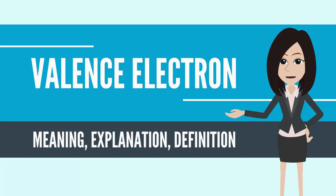An atom with a closed shell of valence electrons corresponding to an electron configuration of s2 p6 tends to be chemically inert.